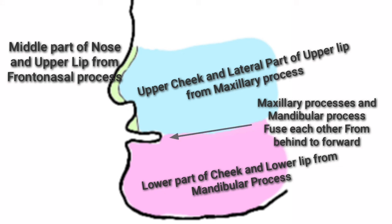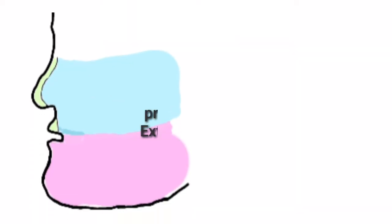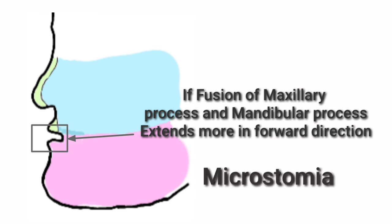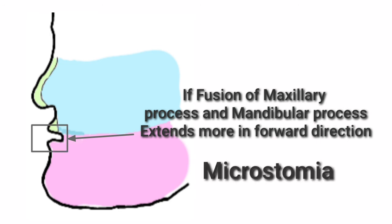If fusion stops at the right position, then a normal-sized mouth is formed. If fusion of the maxillary process and mandibular process extends more in the forward direction, the size of the mouth will decrease, leading to microstomia.